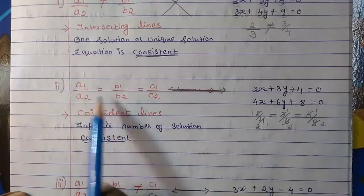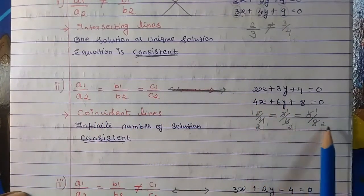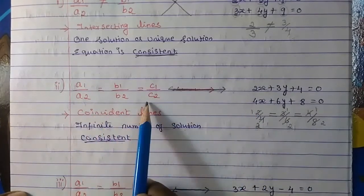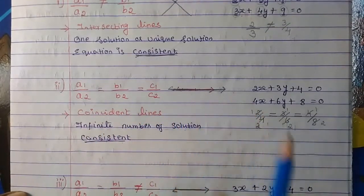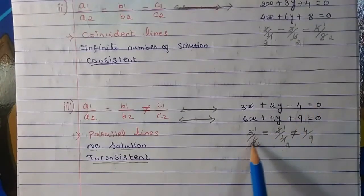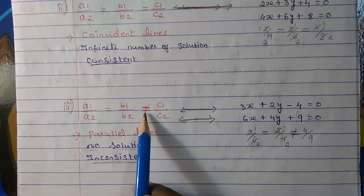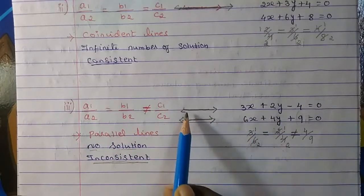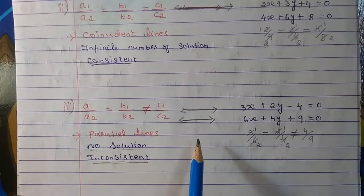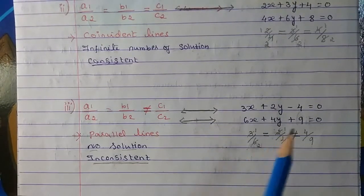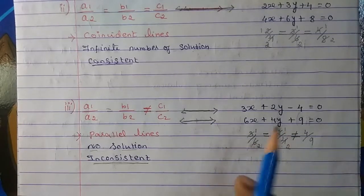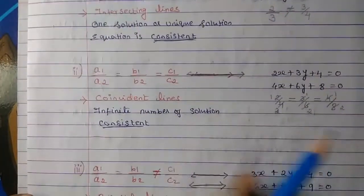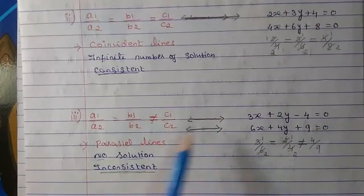And if you find all the conditions — all these — when we compare and simplify, if everything is same, like 1 upon 2, 1 upon 2, 1 upon 2 when we simplify, then our graph will be coincident. And if you find both the first ratios are same, but the third one is not same — so when c1 upon c2 is not equal — that type of equations will have parallel lines if we plot the graph. So if a1/a2 ≠ b1/b2, intersecting; if all three equal, coincident; if a1/a2 = b1/b2 ≠ c1/c2, parallel.